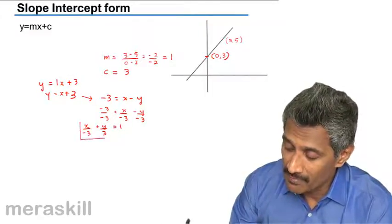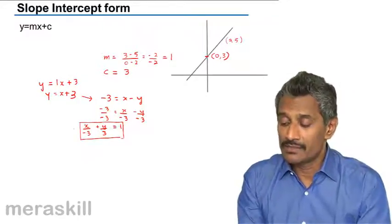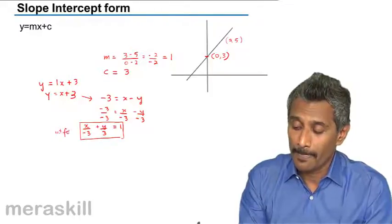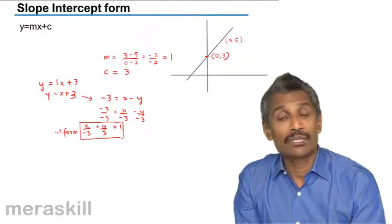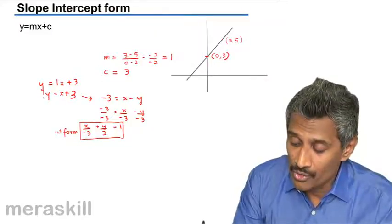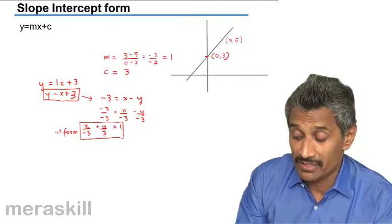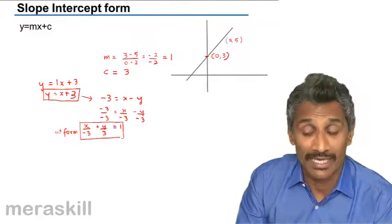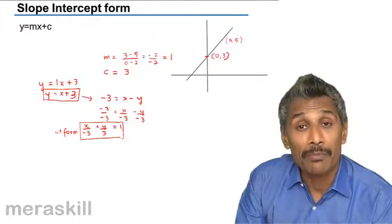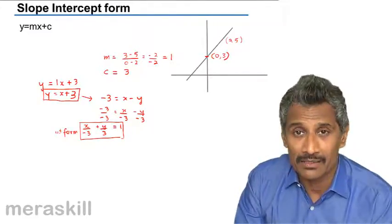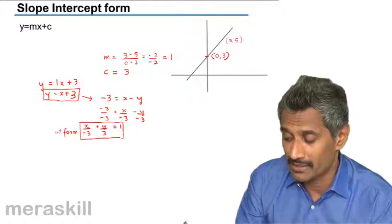So the same line has a different form of equation. This is the intercept form, which involves both x-intercept and y-intercept. And you have the slope-intercept form, in which the slope is involved and one of the intercepts, that is y-intercept. Remember, it has to be y is equal to mx plus the y-intercept, not x-intercept. X-intercept is not involved over here. It is slope and y-intercept.